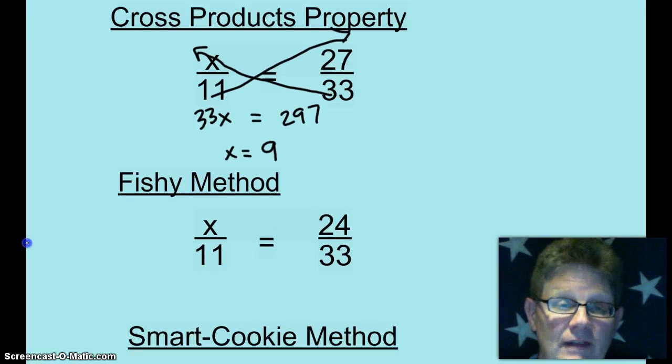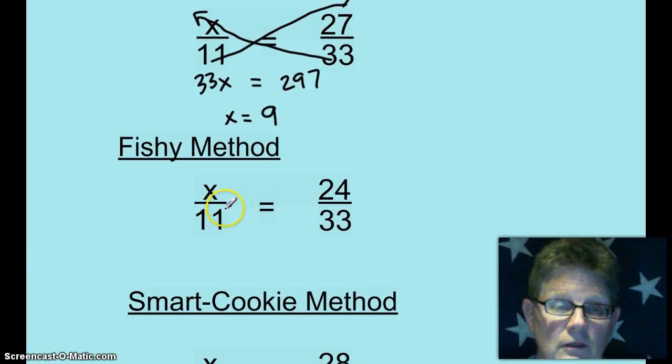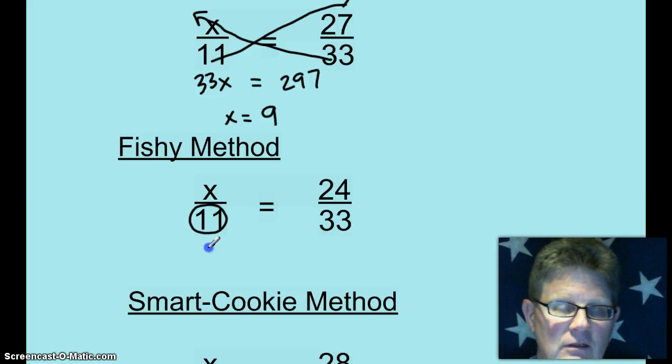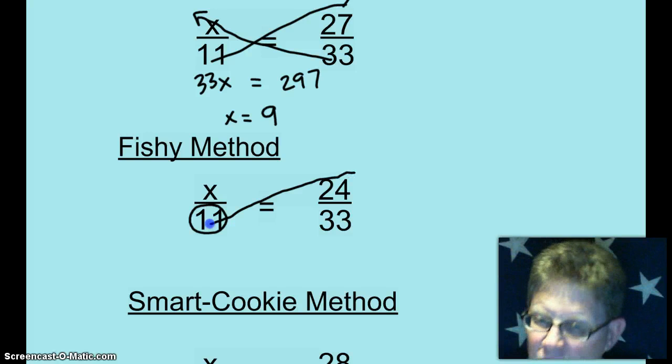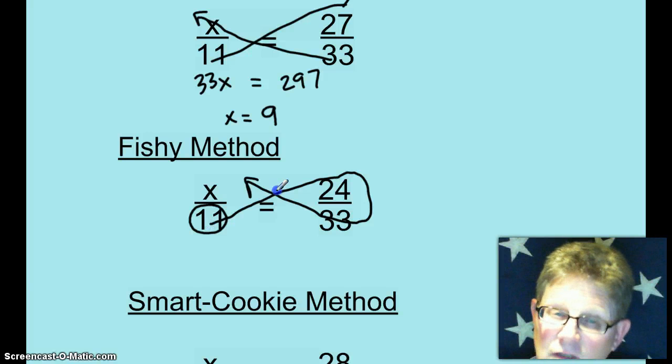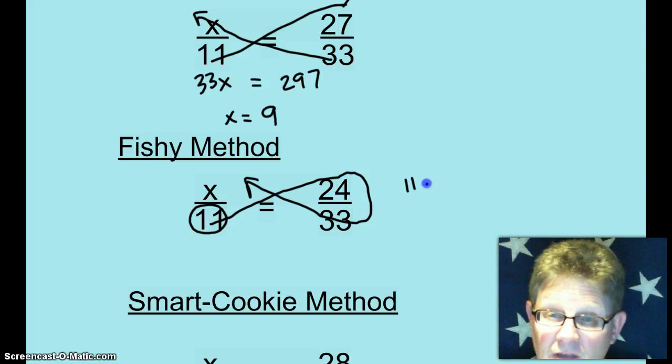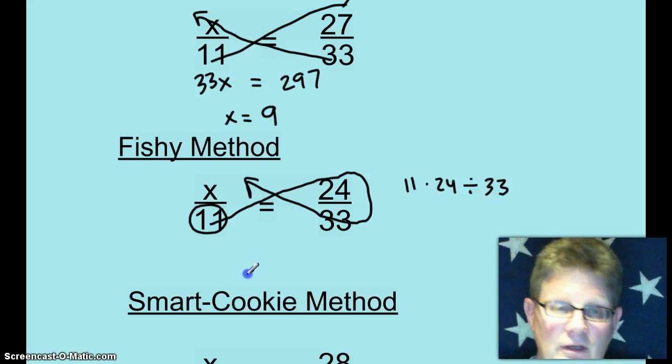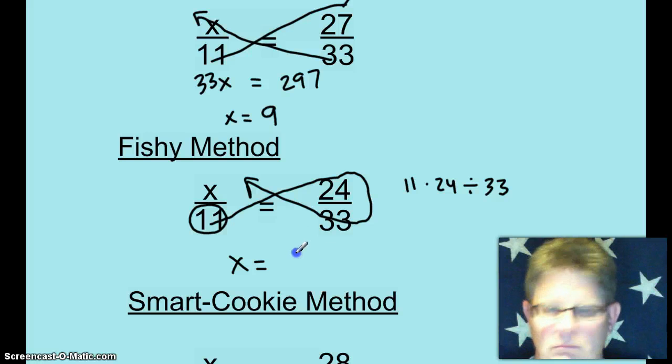The other way that I've learned is the fishing method. Start on the ratio that is associated with the X. And what you want to do is start at 11, go cross diagonally and multiply, turn the corner, and when you turn the corner you divide. So what you're really doing is 11 times 24 divided by 33 on the calculator. And then you get X equals 8.